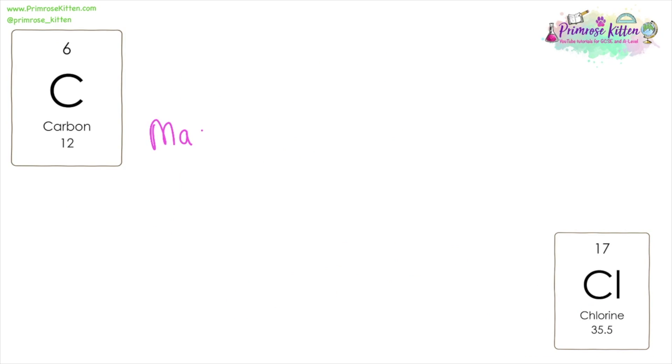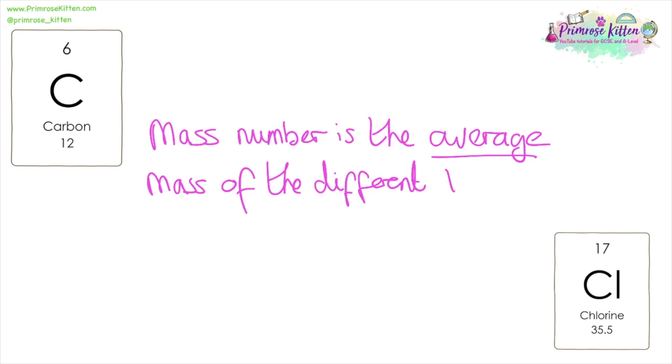Part of this is all to do with understanding of our definitions. Mass number is not just the number of protons plus the number of neutrons. The mass number is the average mass of all of the different occurring isotopes of an element.